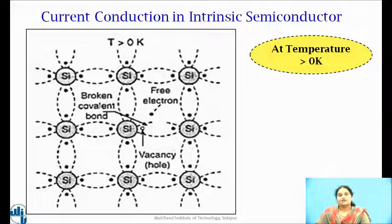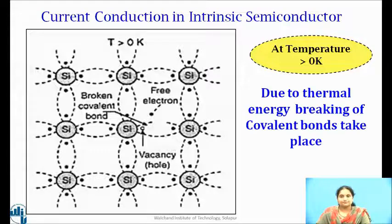Whenever a covalent bond is ruptured by thermal energy, a valence electron becomes free. The higher the temperature, the more covalent bonds are broken. The electrons liberated from bonds move randomly in the void spaces between the atoms in the crystal. And now, if an electric field is applied, these free electrons cause electrical conduction.